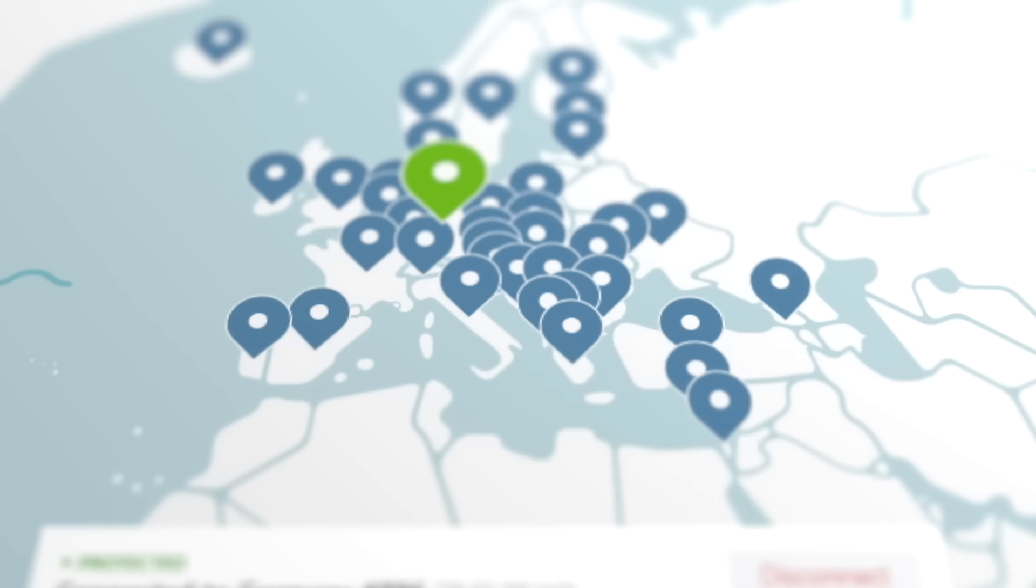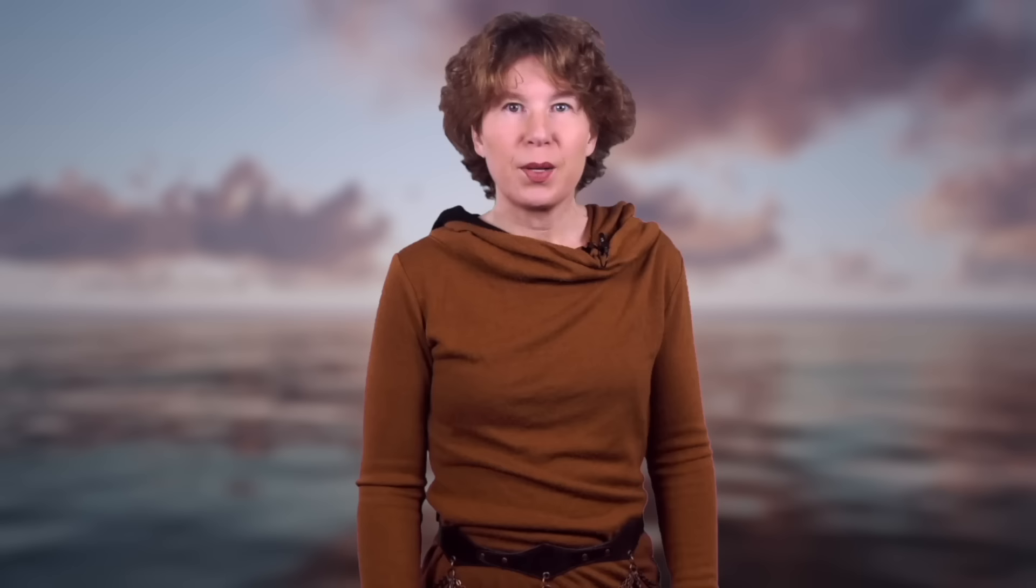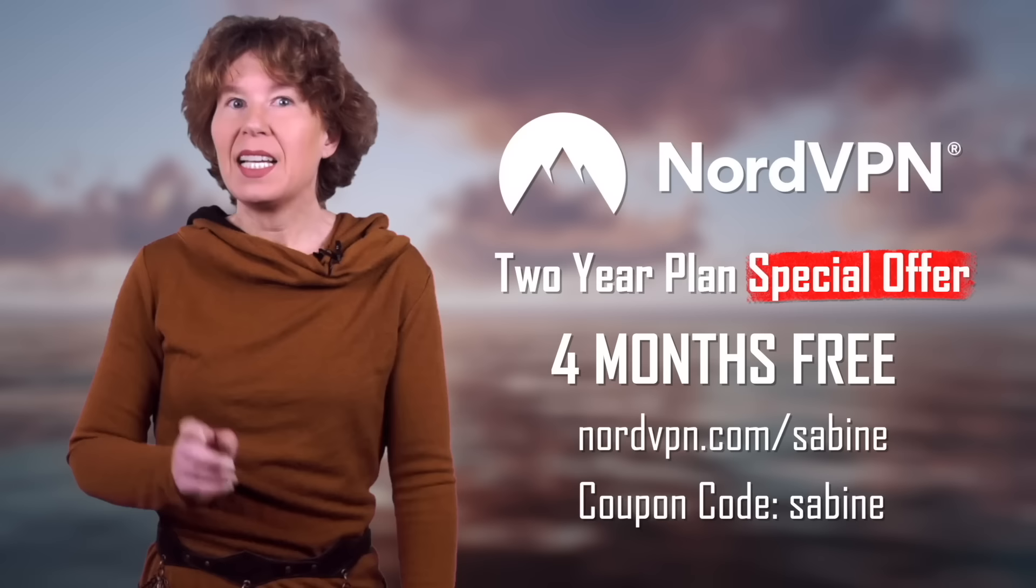You can make use of our special offer if you use the link NordVPN.com or the coupon code Sabine. NordVPN is super easy to use, runs on pretty much all platforms, and installs in a minute. If you're still not sure what you need an app like this for, let me mention that they have more than 5,000 servers all over the world, and you can choose one. This allows you to access websites in other countries by using a server located there. So if a website or video is blocked where you are, that's an easy way to solve the problem. Once again, that's NordVPN.com slash Sabine or the coupon code Sabine for our special offer. Links in the info below, so go and check this out. Thanks for watching. See you next week.